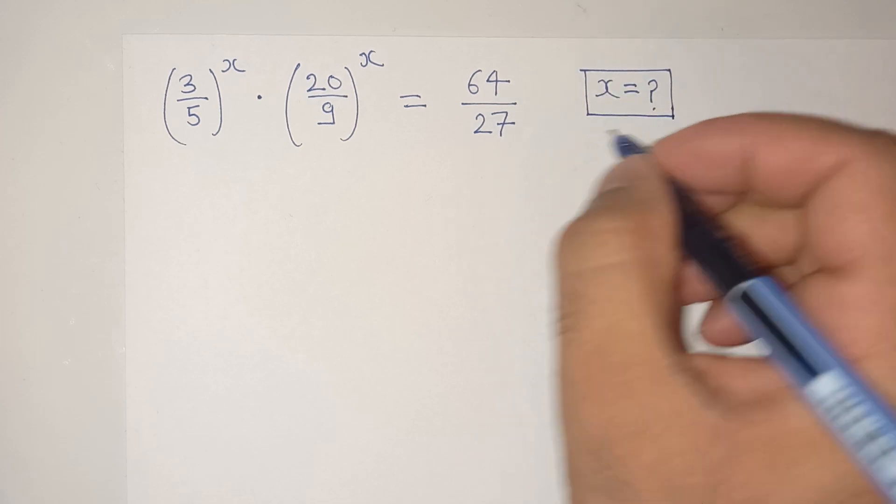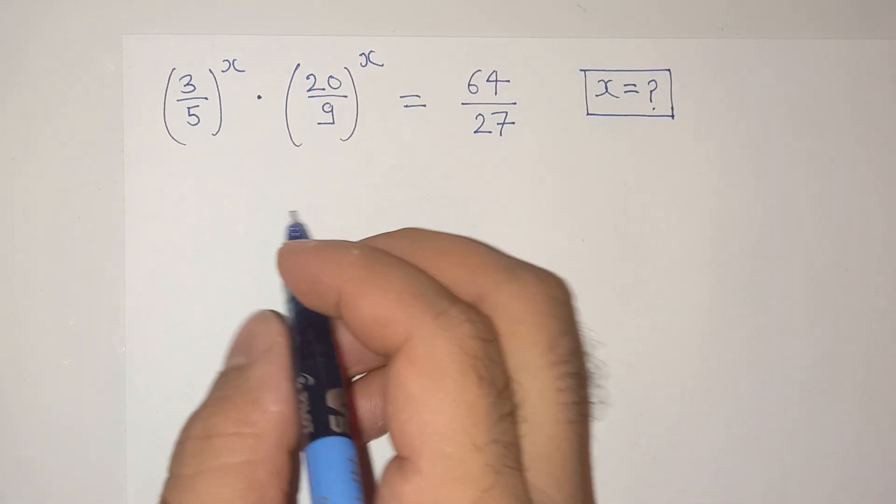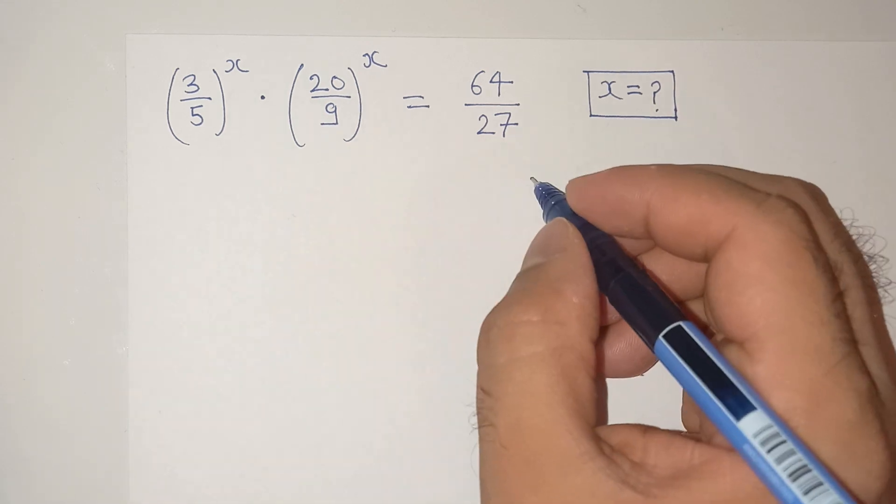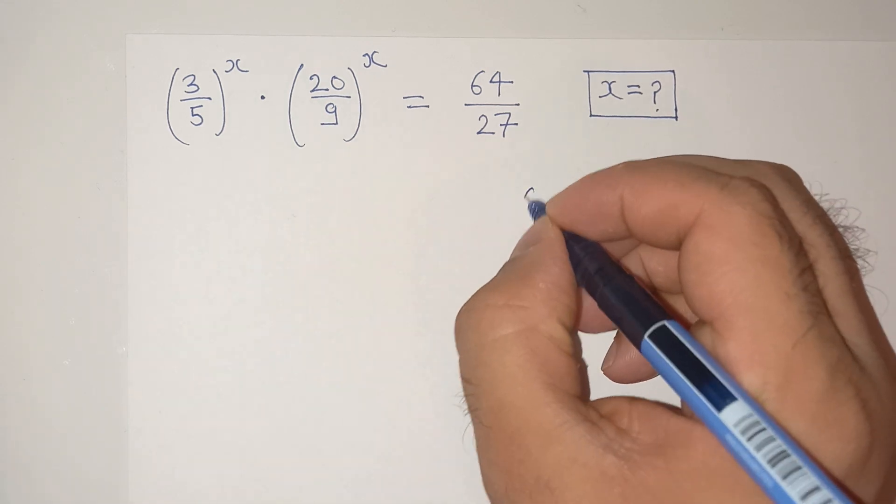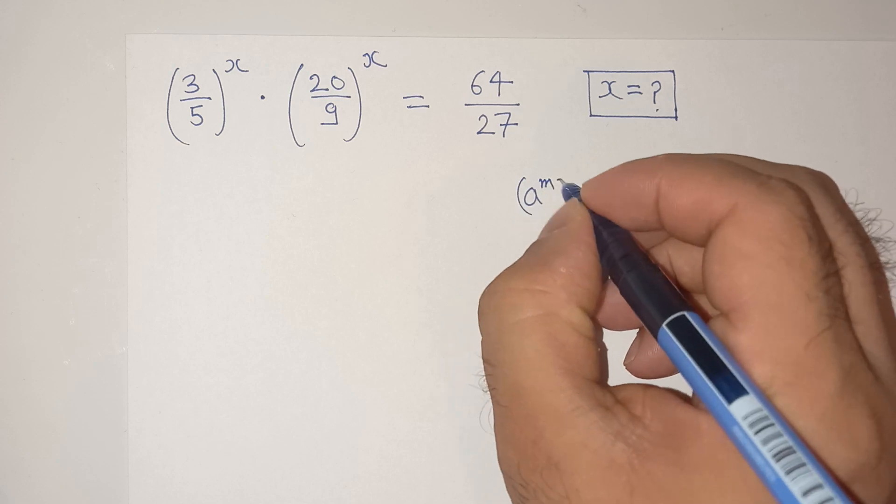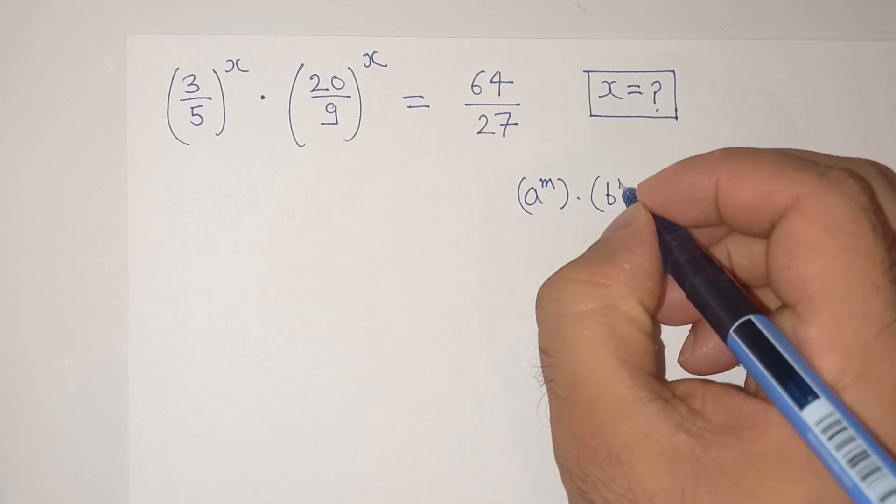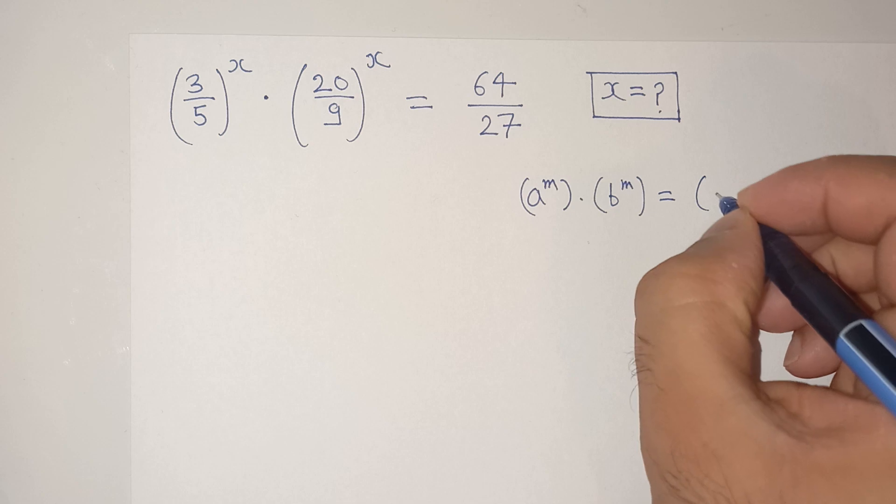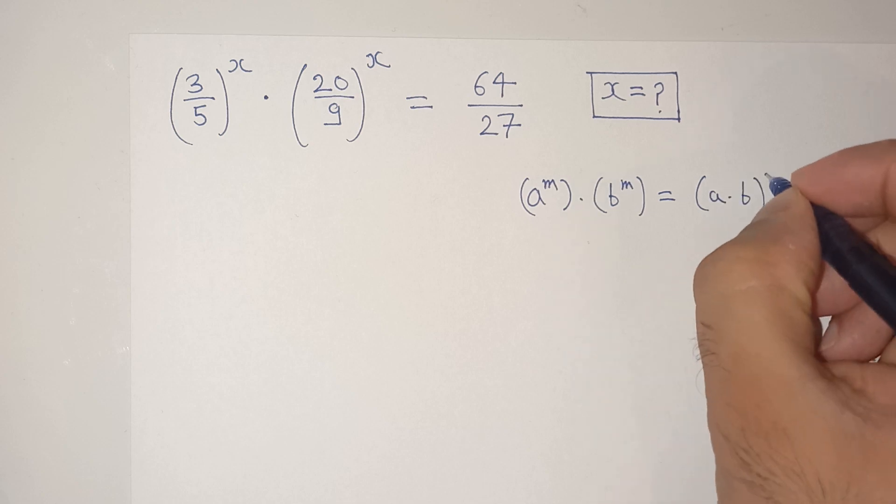How to solve this question? All right, we know this exponential rule which says a power m multiplied by b power m is same as a multiplied by b power m.